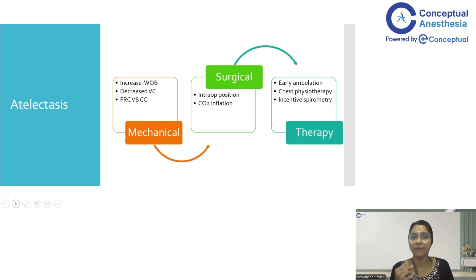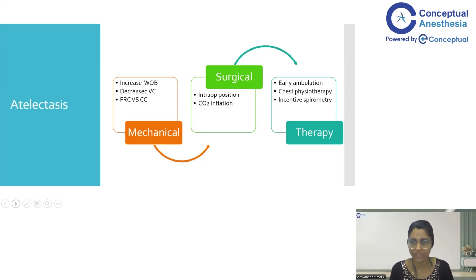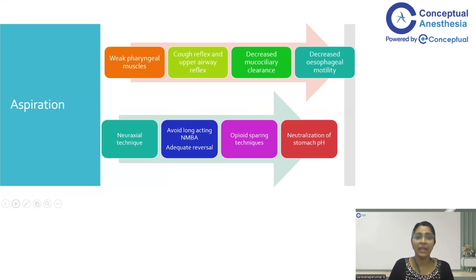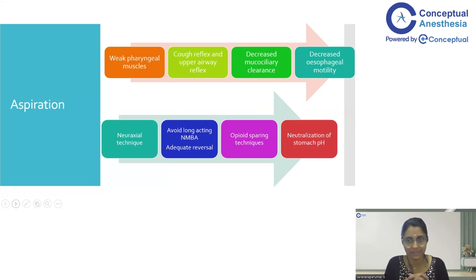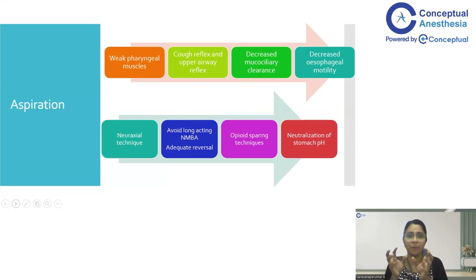Atelectasis can be treated by applying an effective amount of PEEP if the patient is under general anesthesia. In the postoperative and preoperative period, you can teach the patient incentive spirometry. Physiotherapy and ambulation can help in recruiting the lungs and decreasing atelectasis. These elderly patients are also more prone for aspiration because they have very weak pharyngeal muscles, decreased cough reflex, decreased upper airway reflexes, decreased mucociliary clearance, decreased esophageal motility, and delayed gastric emptying.